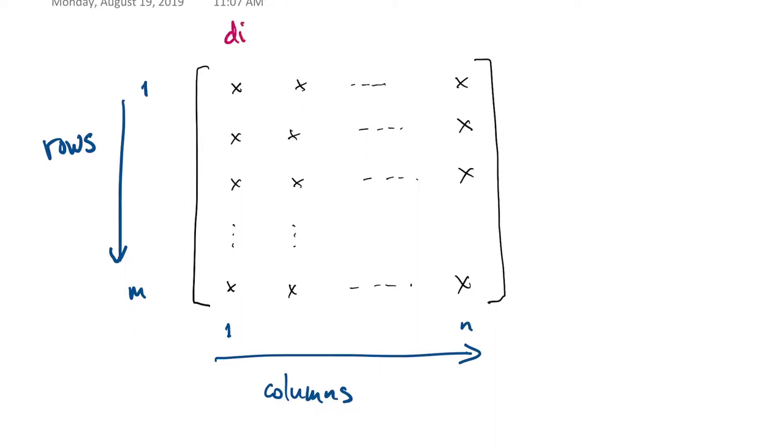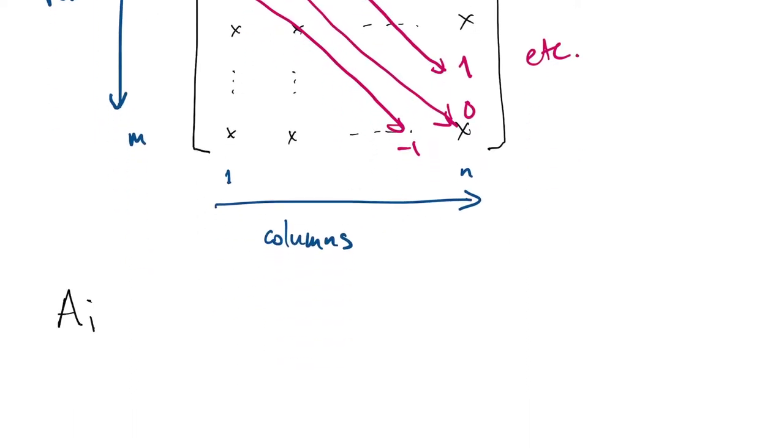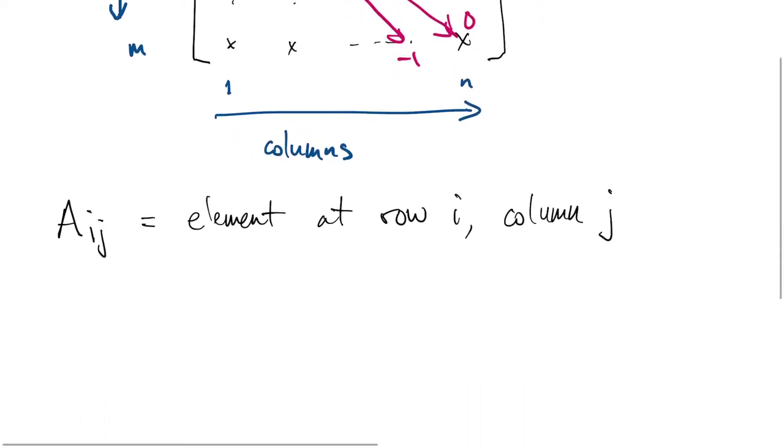We also sometimes refer to a matrix by its diagonals. If you start at the upper left corner, that's diagonal number 0, or the main diagonal. Below that you get a negative diagonal, and above you get a positive diagonal number. We'll use a capital Aij to represent the element of matrix A at row i and column j. So it always goes row, then column.